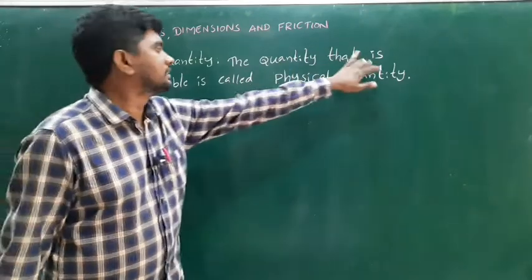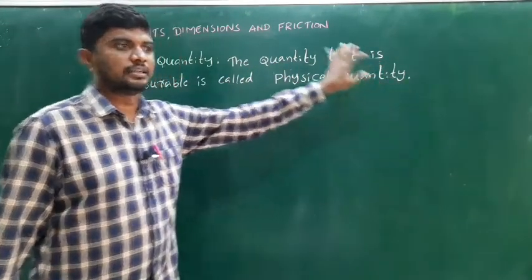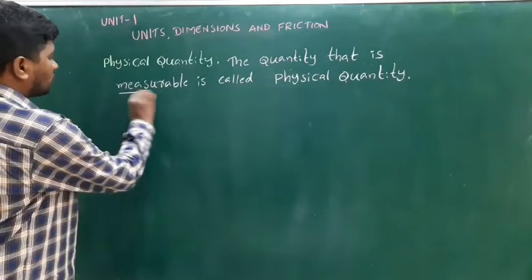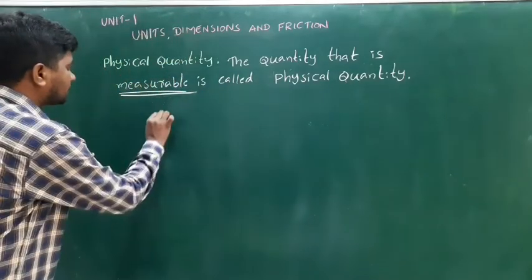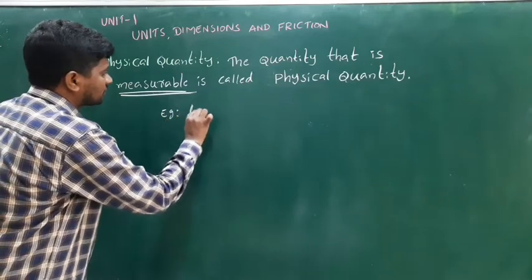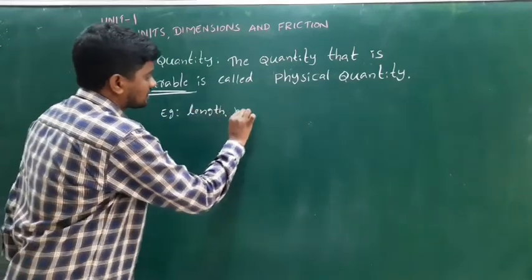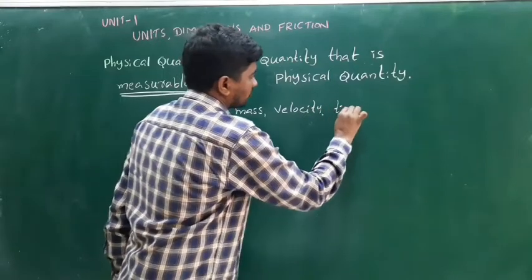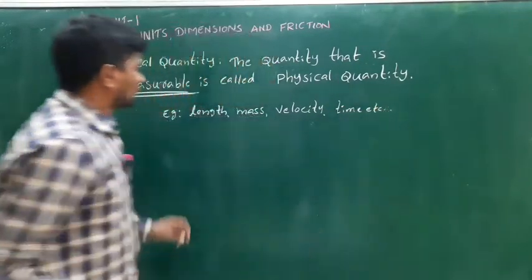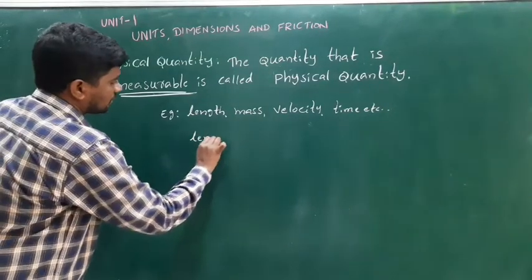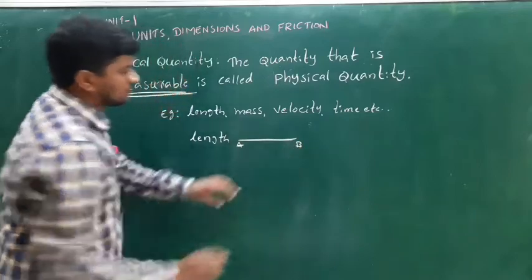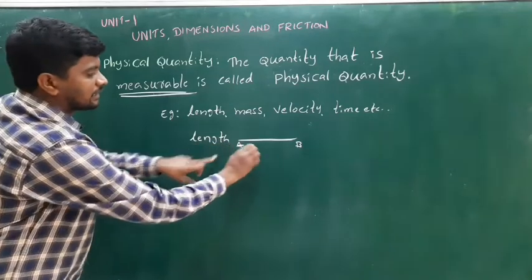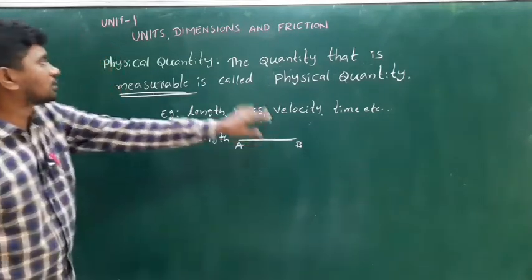What is physical quantity? The quantity that is measurable is called a physical quantity. For example, length — the distance between two points is measurable. The quantity, length, is measurable, so it is called a physical quantity.